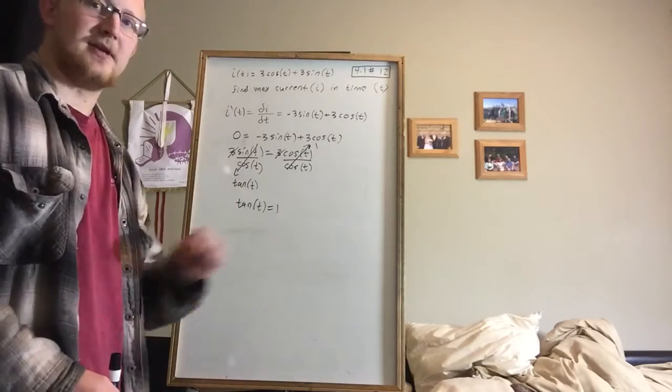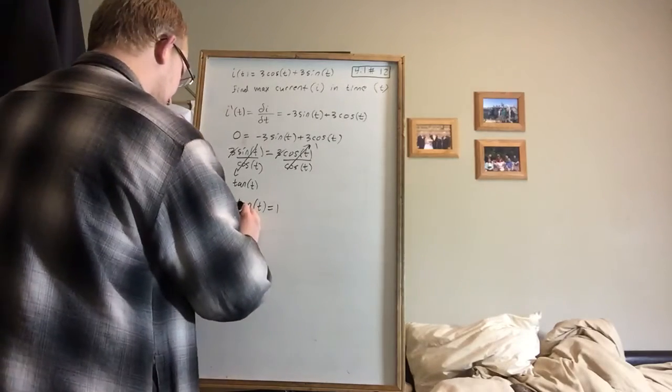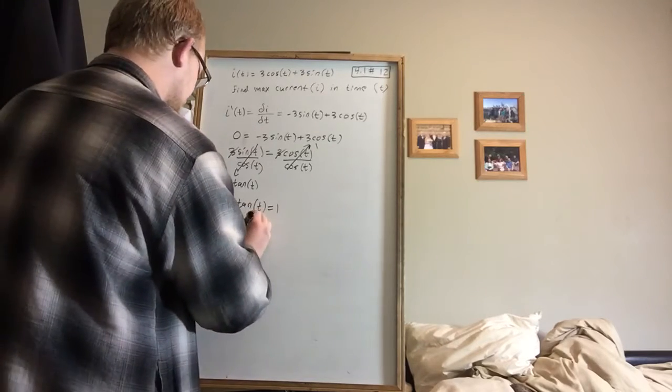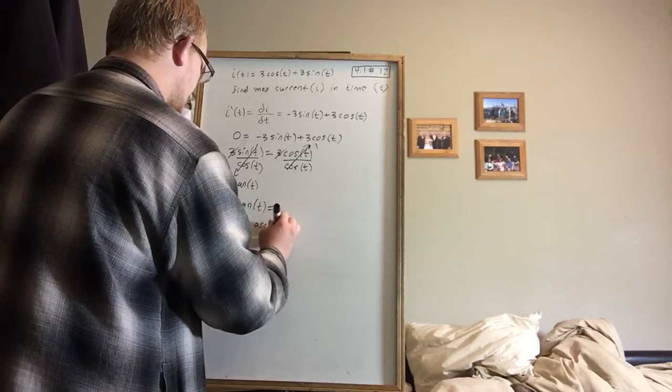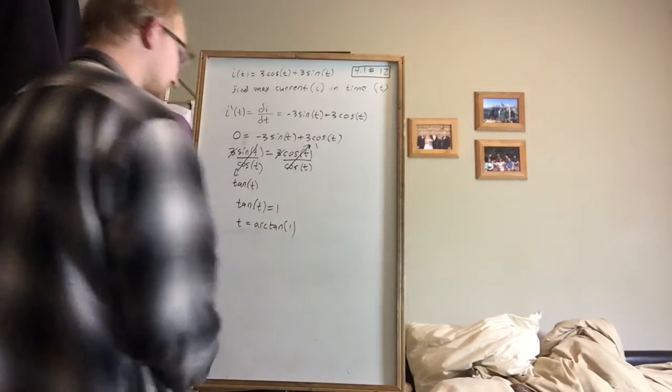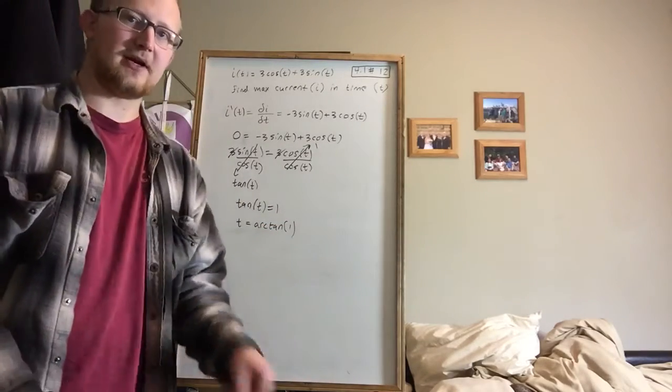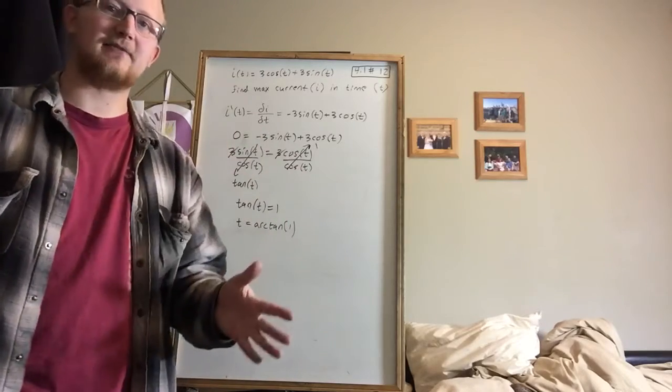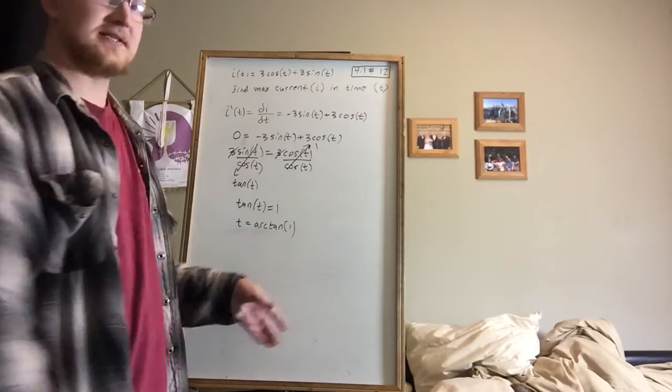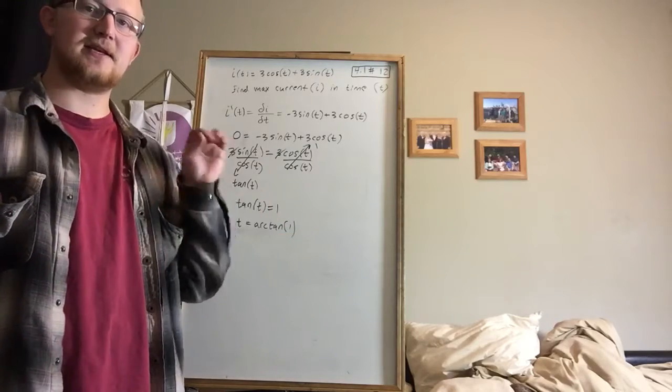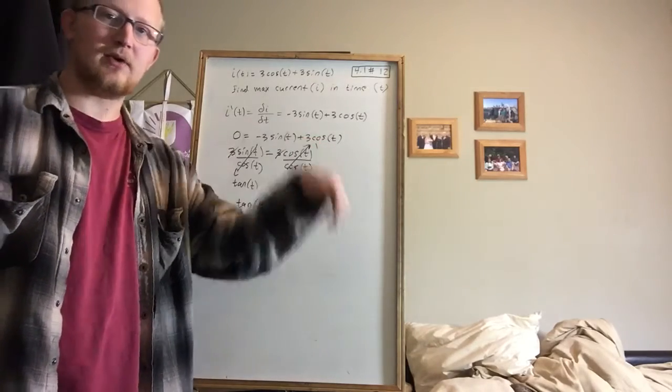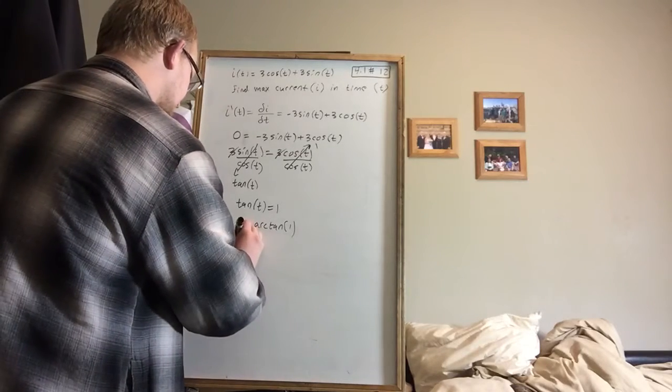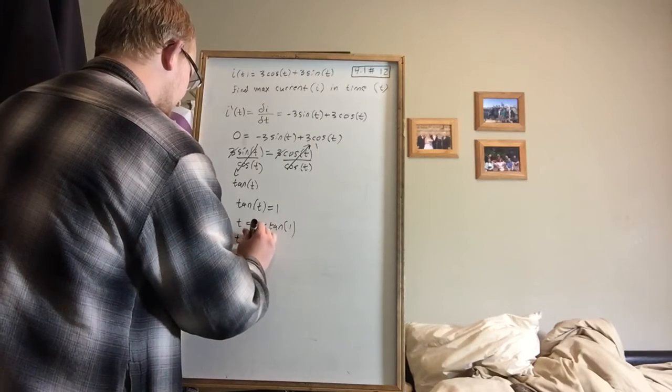And how do we undo tangent? We use the arctan function. So t, the time we're looking for, is equal to arctan of 1. And this is something you can plug into your calculator. The problem asks for an exact value. And what it ends up being is that if you look at the tangent graph, its output is 1 when its input is pi fourths. And once again, you can type this in your calculator. So time is pi fourths.